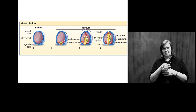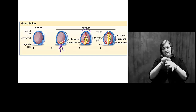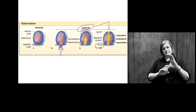So with our blastula — our hollow ball of cells — we're going to fold in like we discussed, form the gut track, and in the end have something known as a gastrula: a finalized gut track.